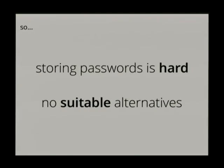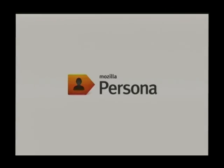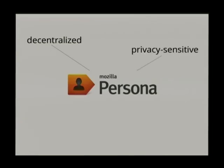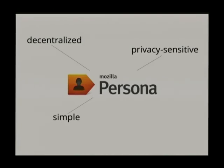Stored passwords are hard and a big mess, and there are no real suitable alternatives for the open web. That's why we decided to build Persona. Just like OpenID, Persona is a decentralized system — anybody can be their own identity provider, you can change providers, and so on. It's also federated. It is privacy-sensitive: we put the browser in the middle of the chain as your trusted intermediary, because the browser already sees every website you're logging into. We want this to be really simple — both for developers, because if it's not simple for developers it's never going to be secure, and for users, because if it's not simple for users, sites won't adopt it. And like everything Mozilla does, this system is fully open-source.